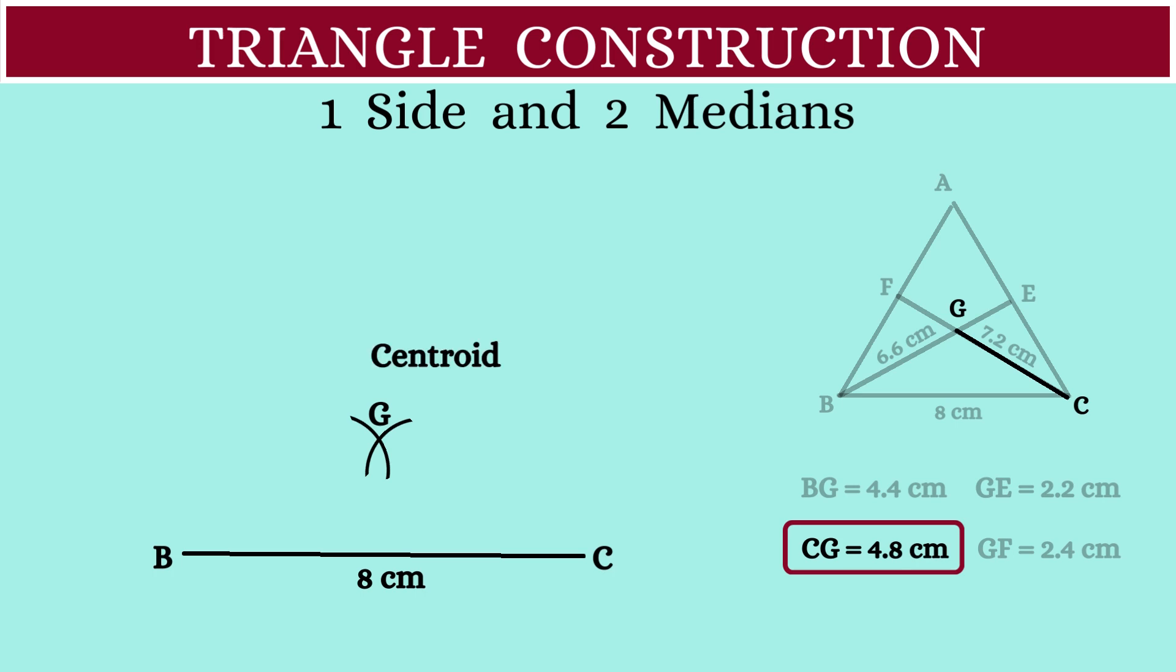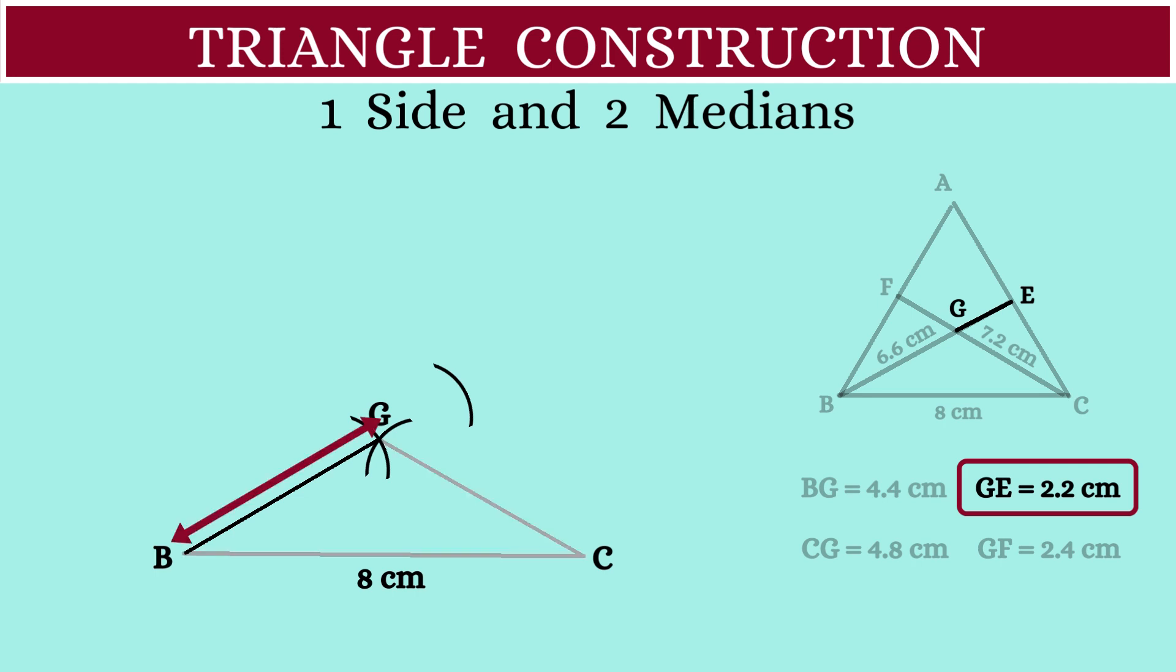Now, with G as the center and a radius of 2.2 centimeters, let's draw an arc here. We will extend the line BG up to this arc and mark this point as E.